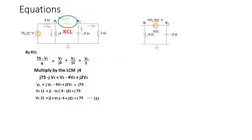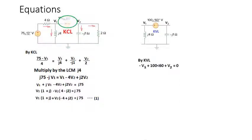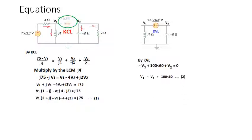Now we'll write the equation for the KVL part, and this is very simple. Going around the loop: −v1 + 100∠60° + v2 = 0, or equivalently, v1 − v2 = 100∠60°. This is Equation 2.